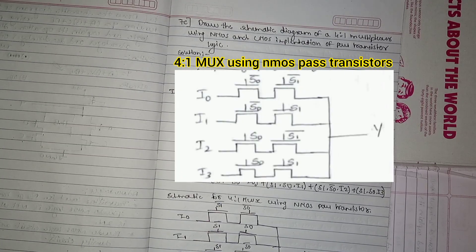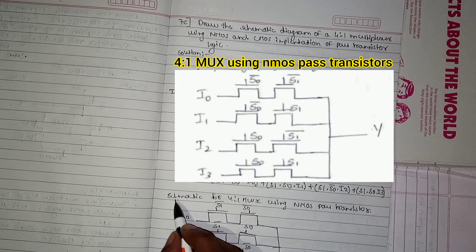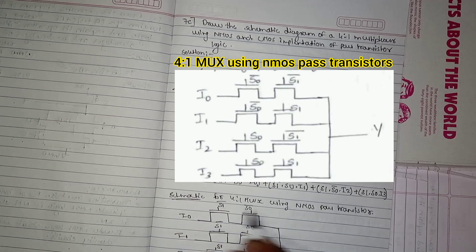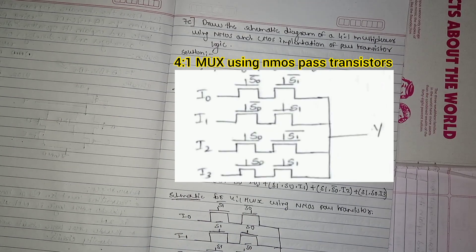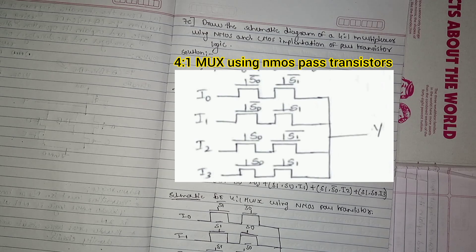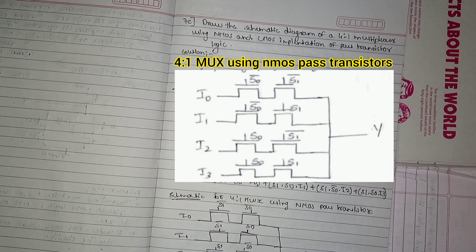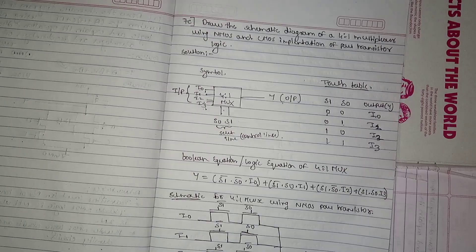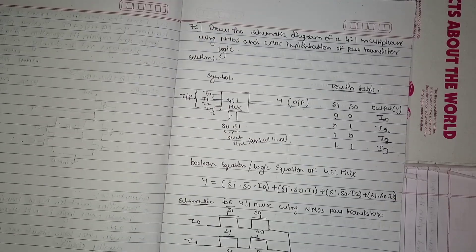This is the schematic for the 4-to-1 MUX using NMOS pass transistors. It is very simple — you just have to understand it and then draw.